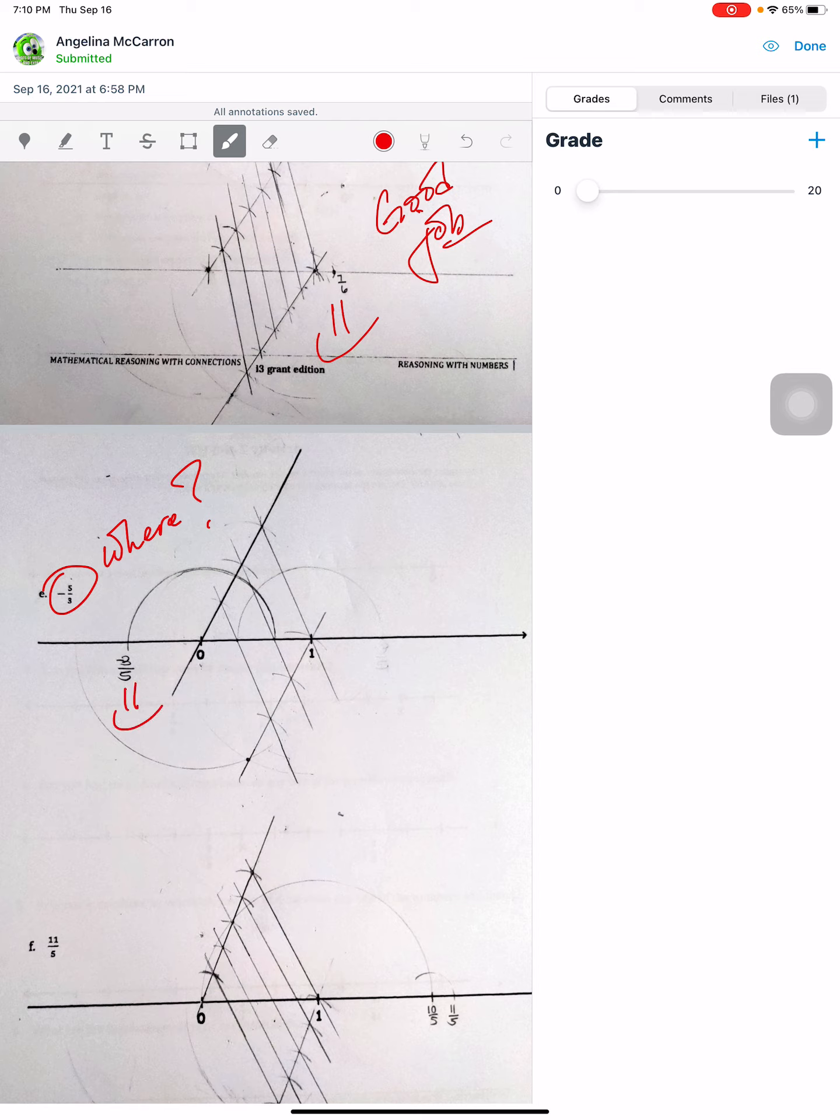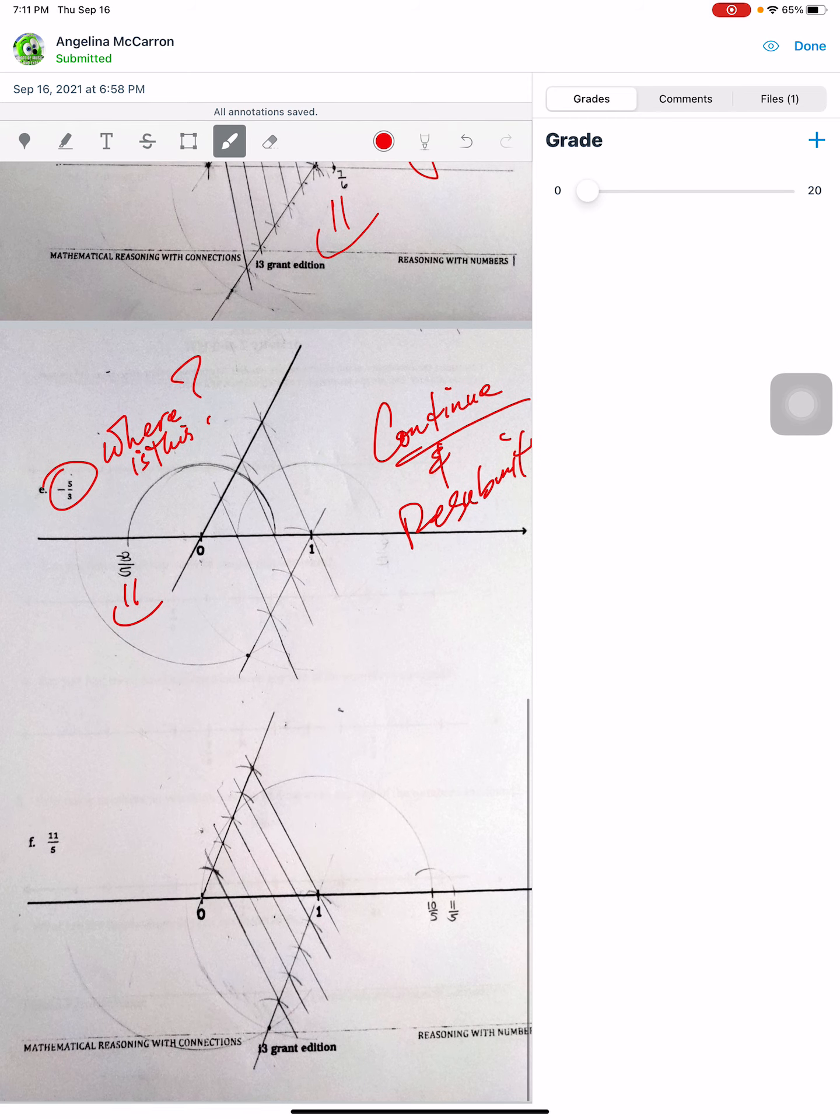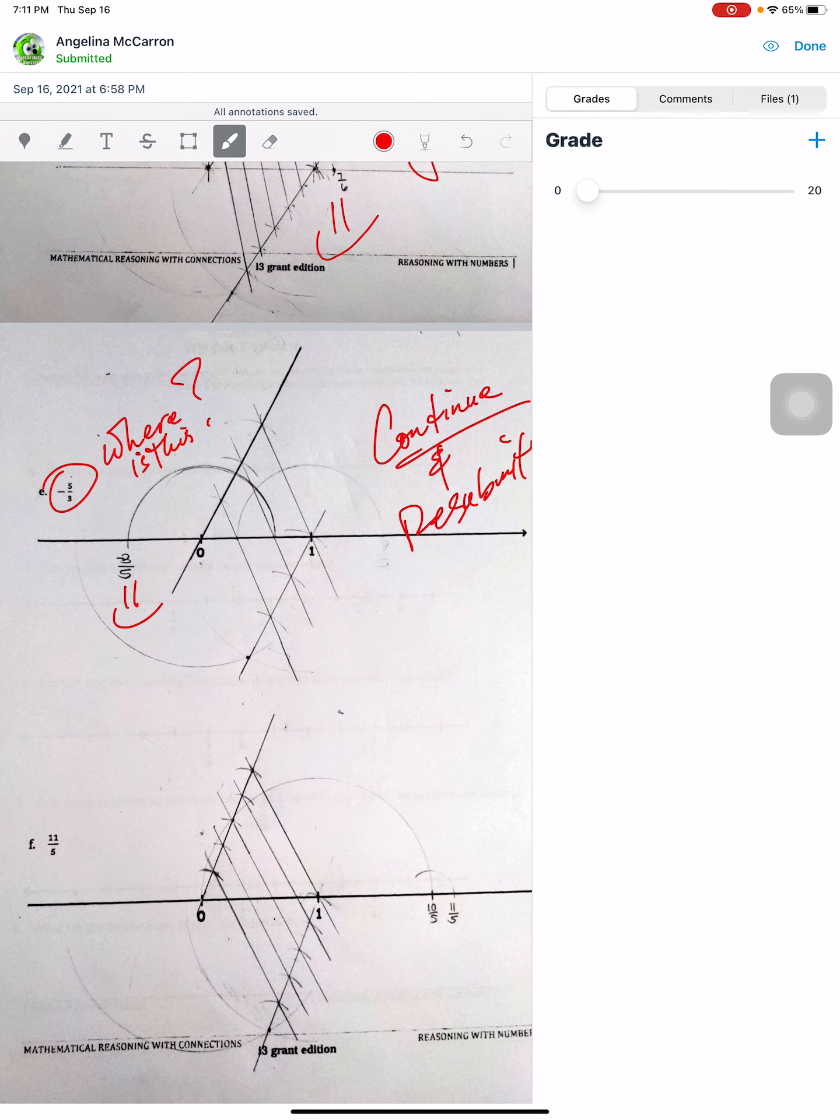They got that backwards, obviously. So this is good, but where is this? So you give them some feedback and then continue on. And what they can do is continue and then resubmit.